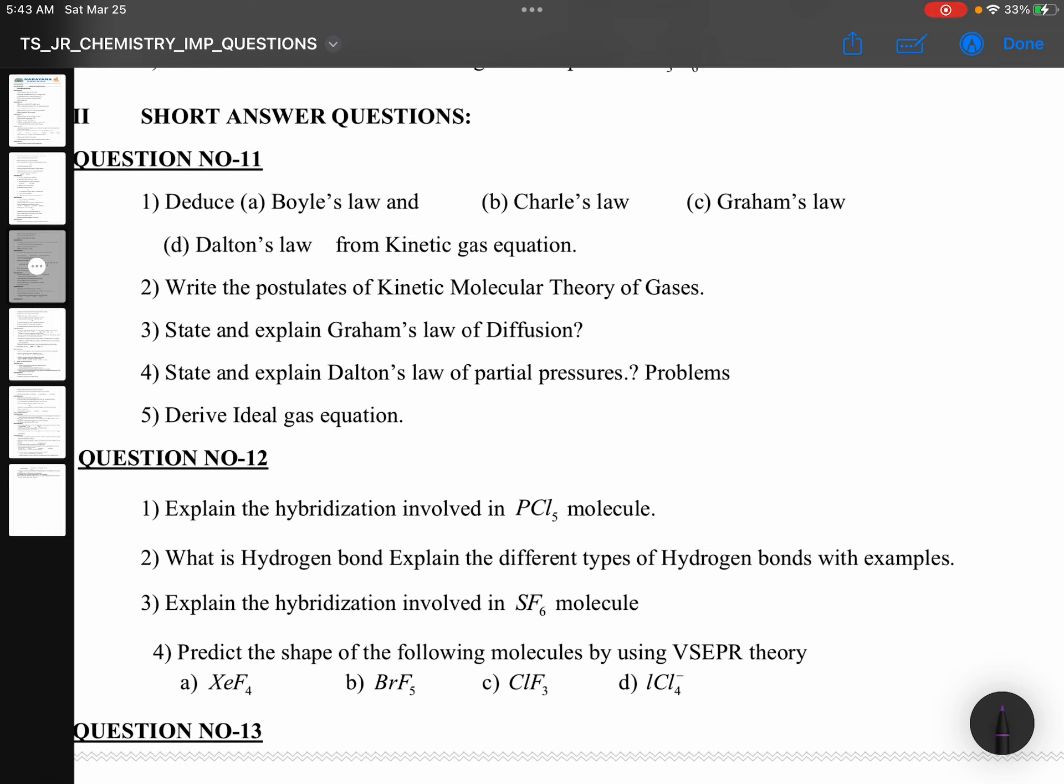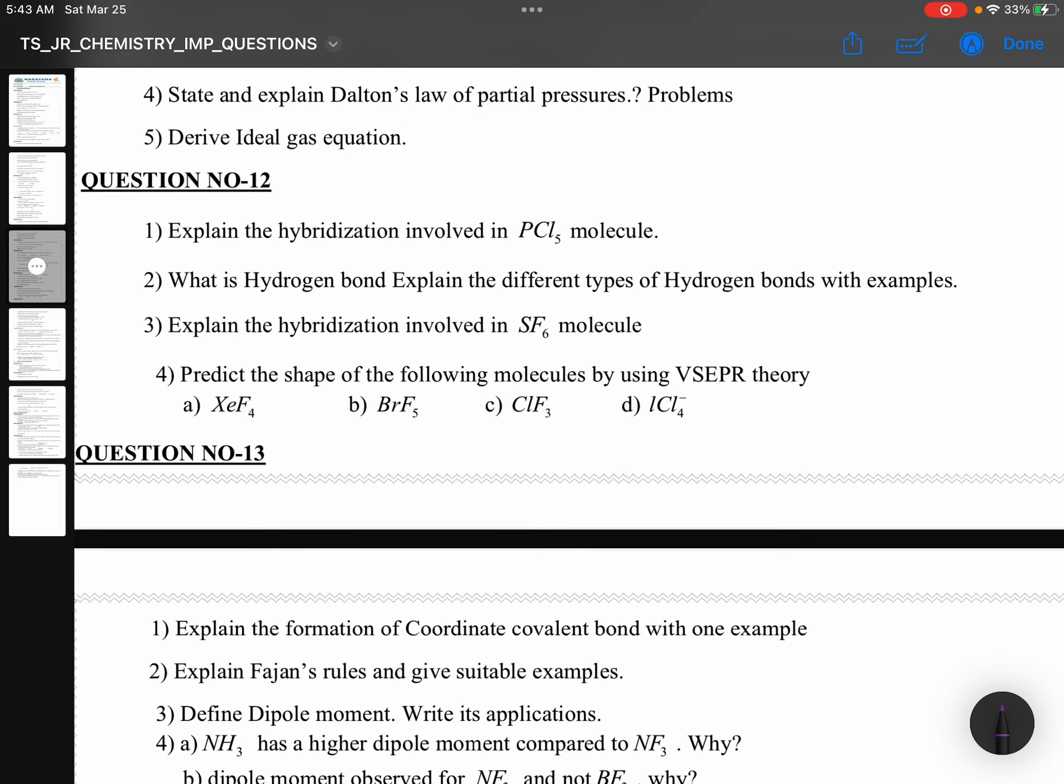First question you see, this is from states of matter. Question number 11: Boyle's law, Charles' law, Graham's law, Dalton's law from kinetic gas equation. Postulates of kinetic molecular theory. State and explain Graham's law of diffusion. State and explain Dalton's law of partial pressures. In both the cases, problem will be there. Derive ideal gas equation. Ideal gas equation, chances are very less.